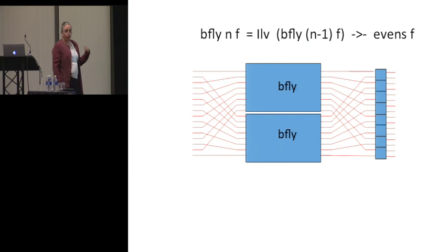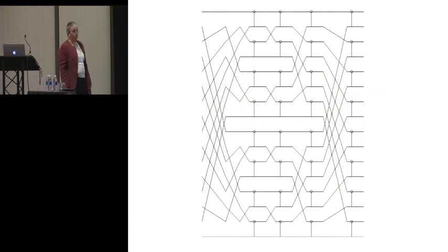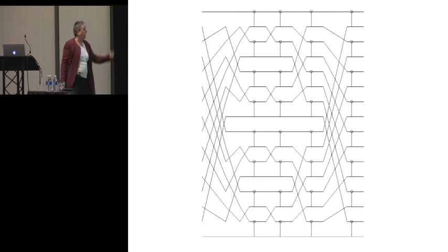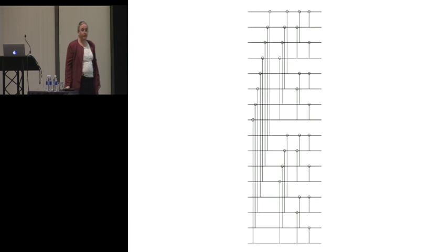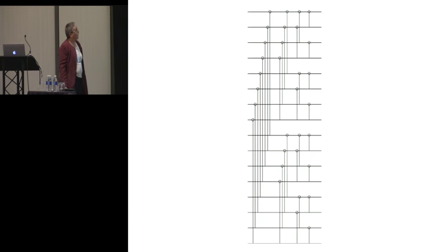Once you have things like ILV, you can start to describe well-known networks. Here's a construction called a butterfly network, made out of ILV. A butterfly network is made by interleaving two half-sized butterfly networks and then composing something called 'evens' on the right-hand end, which applies the small function f to adjacent elements of the array. If we draw a picture of the butterfly network, the interleaves cause these rifflings and unrifflings. Using the standard notation, we stretch the wires at each end so that we end up with a conventional representation.